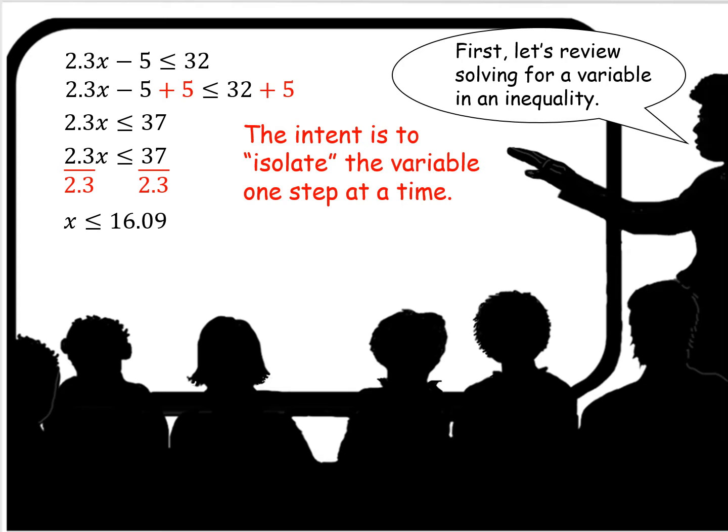We end up with 2.3x less than or equal to 37. Well, to isolate the variable x, we need to then divide by 2.3 on both sides. When we do that, we get that x is less than or equal to 16.09.